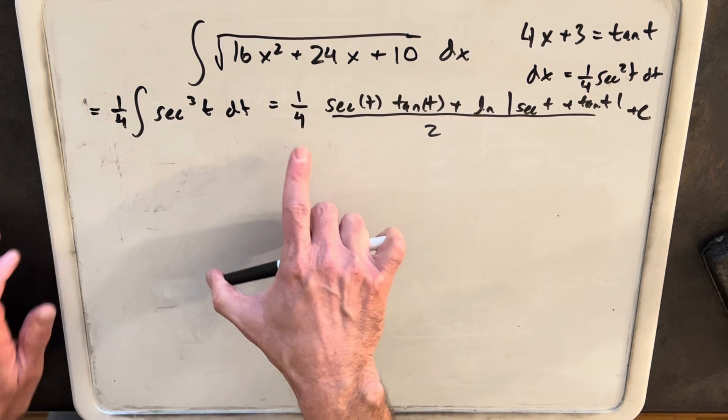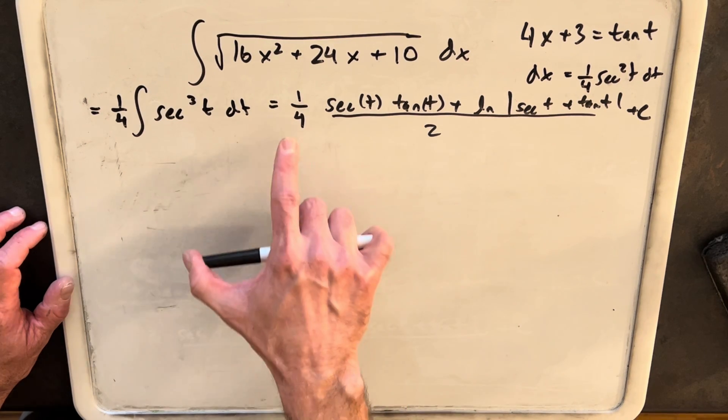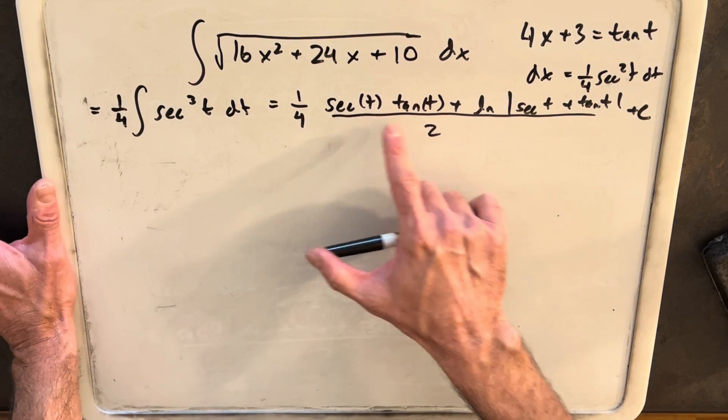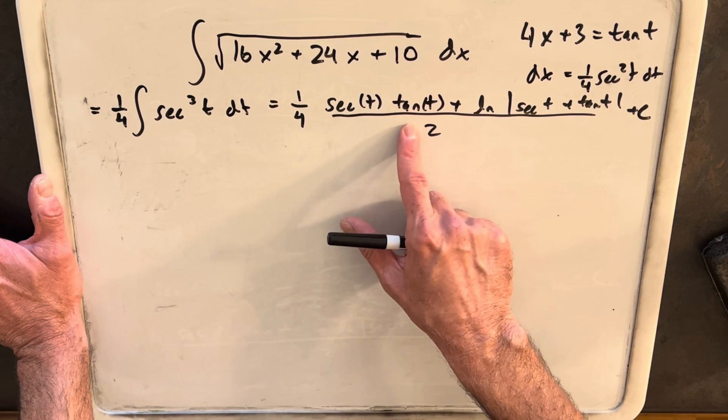Okay, so now we're getting close. We have our 1 fourth and we have our value for the integral of secant cubed. Now clearly we can multiply this 1 fourth and 1 half and have an eighth. But I think before we do that, we want to just notice that we only have two values that we need to plug in. And we want to get this back to x and we need to know secant of t and tan of t.